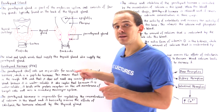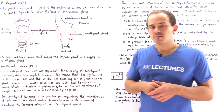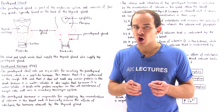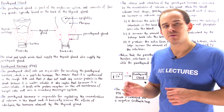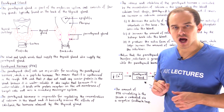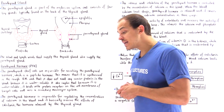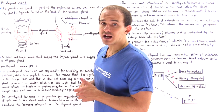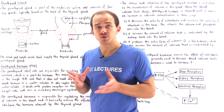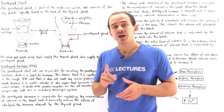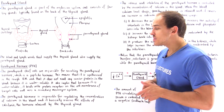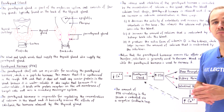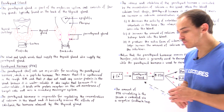Because it's a peptide hormone, that implies it's water soluble, meaning it is soluble in our blood. And that means we do not require any type of protein carrier to actually transport the parathyroid hormone in our blood system.